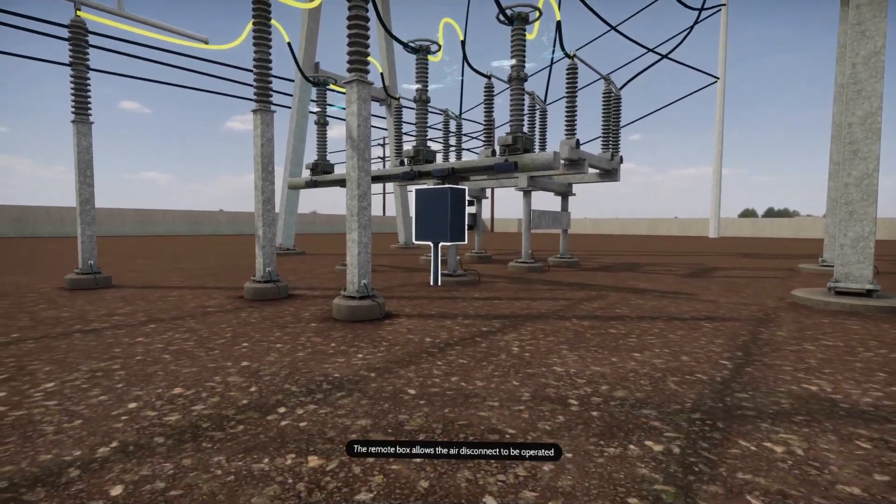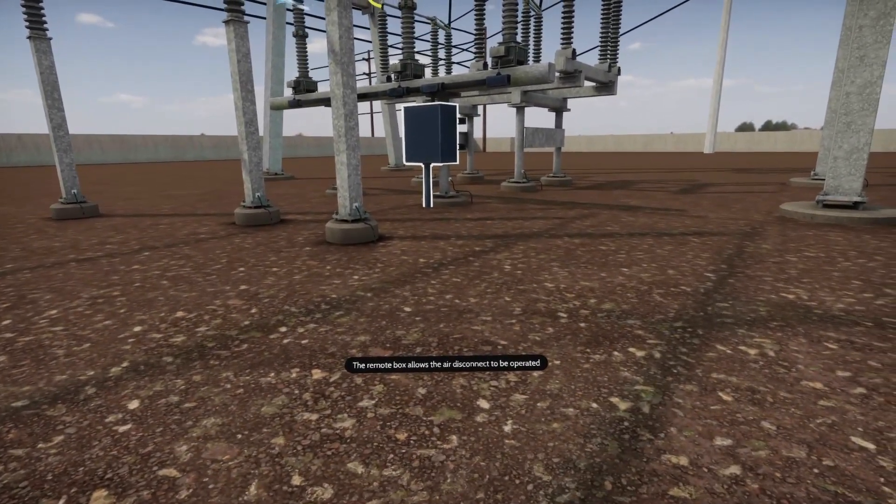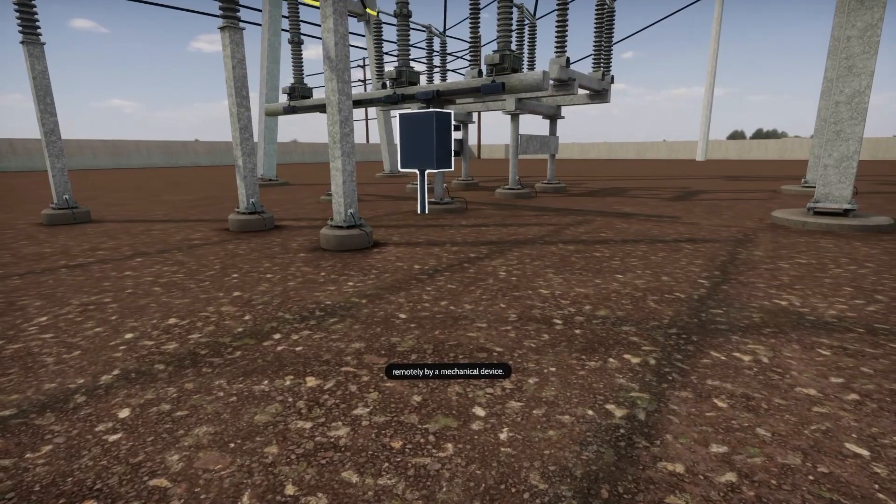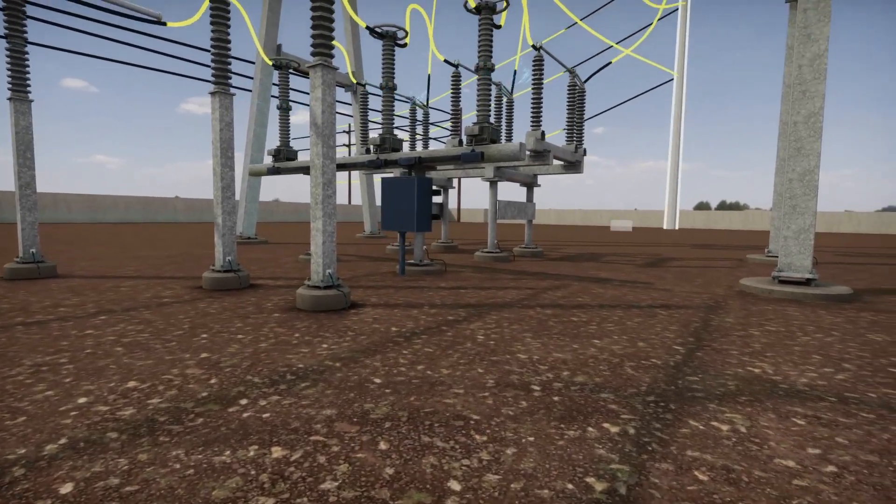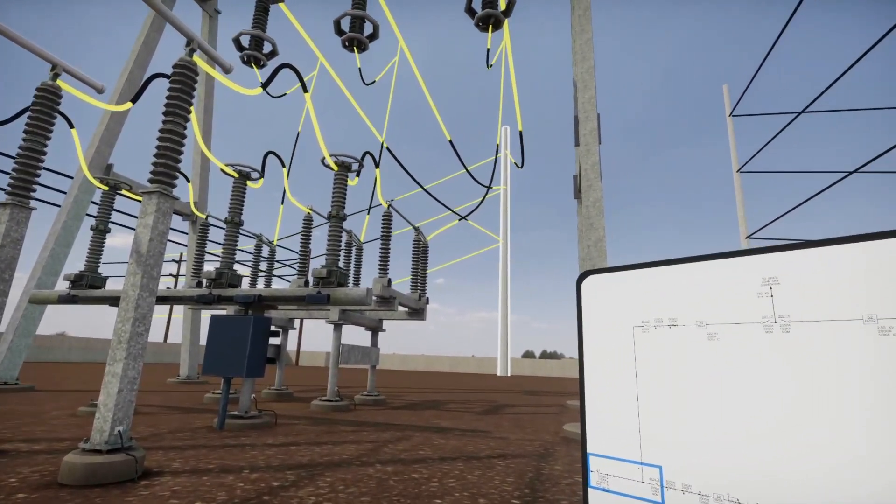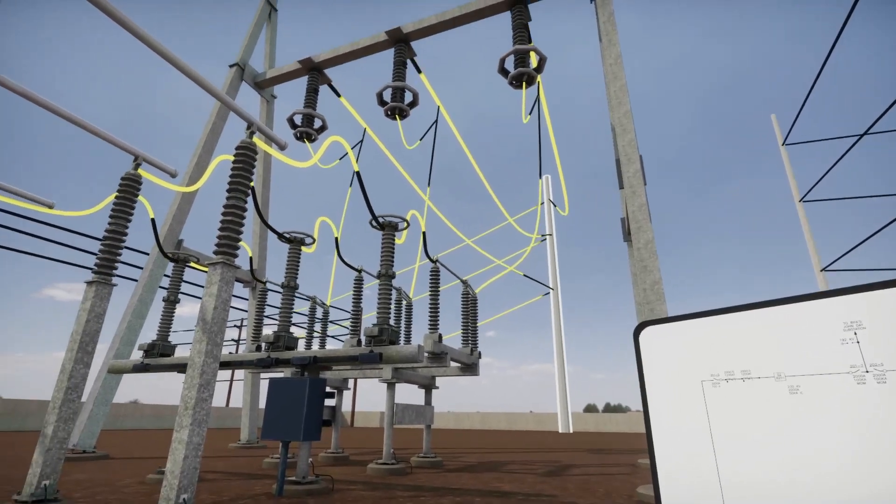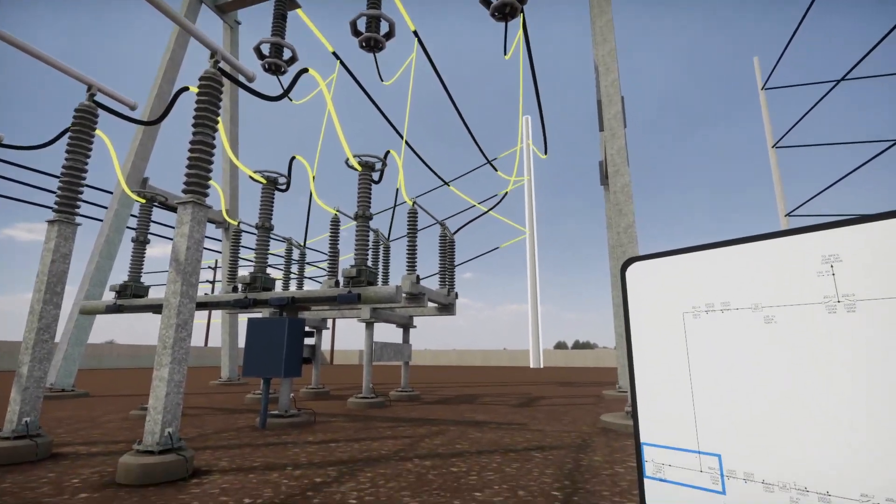The remote box allows the air disconnect to be operated remotely by a mechanical device. This branch off feeds two different substations after five miles of transmission line.